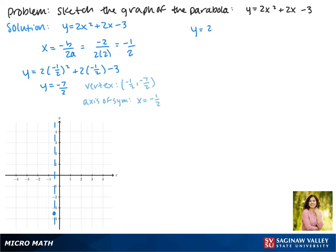Next, we want to find the y-intercept, and we can do that by plugging in a 0 for x, since on the y-axis x is 0. Here we get y to be negative 3, making our y-intercept the point 0, negative 3. We can plot that on our graph.